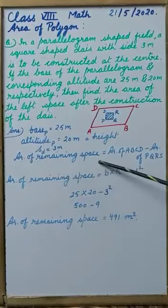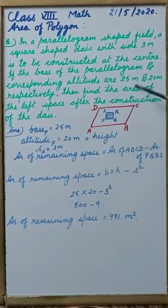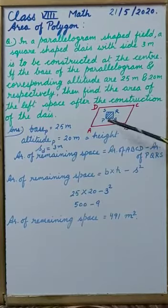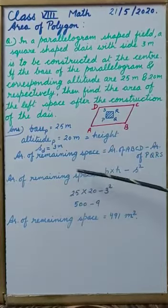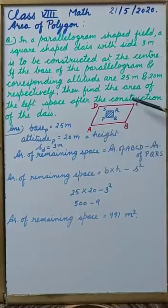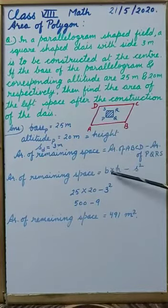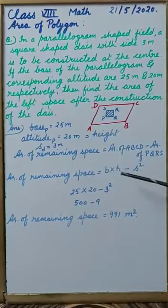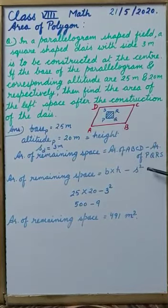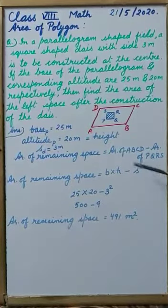Now we have to find area of remaining space. So area of ABCD minus area of PQRS. Area of remaining space will be area of ABCD, which is a parallelogram, so area of parallelogram formula we will write, minus area of PQRS, which is square shape, so we will write area of square.